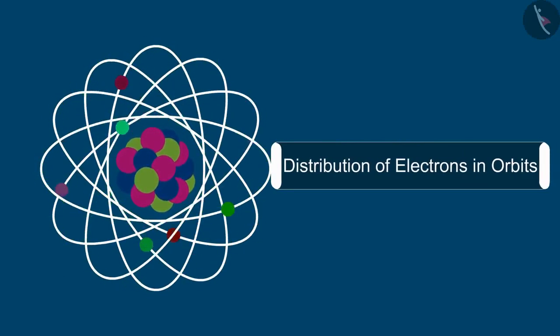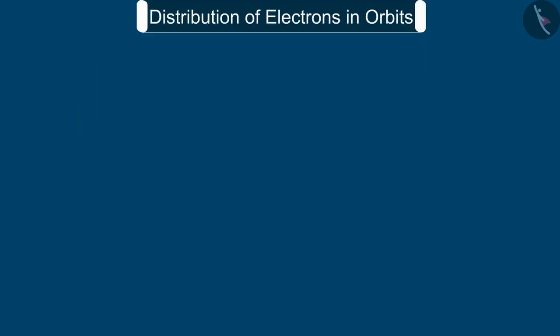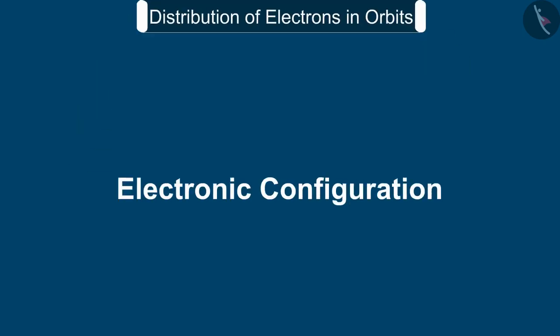The topic we are going to study in this session is the distribution of electrons in orbits. We also know it as electronic configuration.